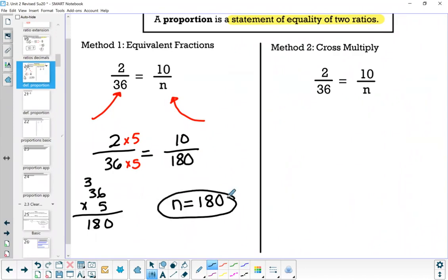So let's take this back to the definition of a proportion. A proportion is a statement of equality of two ratios. Here's a ratio. There's a ratio. The fact that we said that they're equal, the whole thing, this is the proportion.